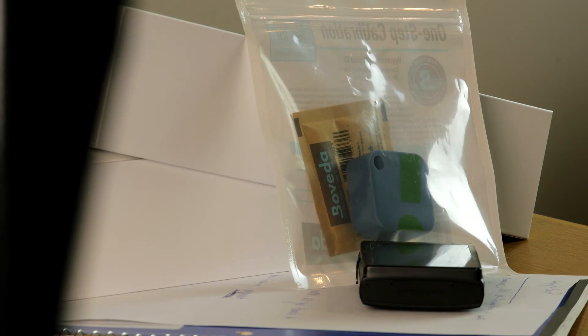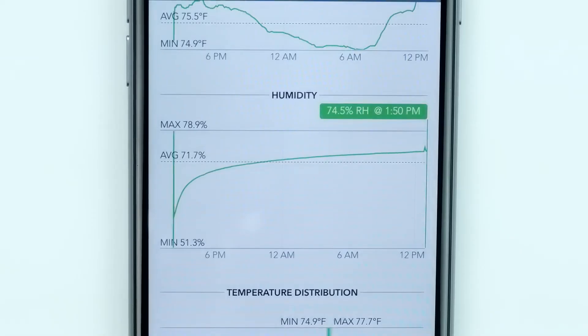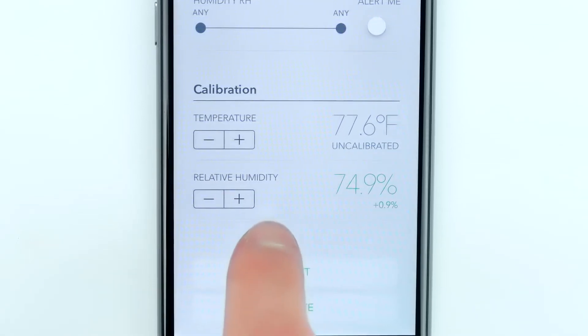Place the baggie in a location at room temperature with as little temperature variation as possible. Let it sit for at least 24 to 36 hours to fully stabilize. Then adjust the settings in the app so the humidity reads 75.0%. And that's all there is to it.